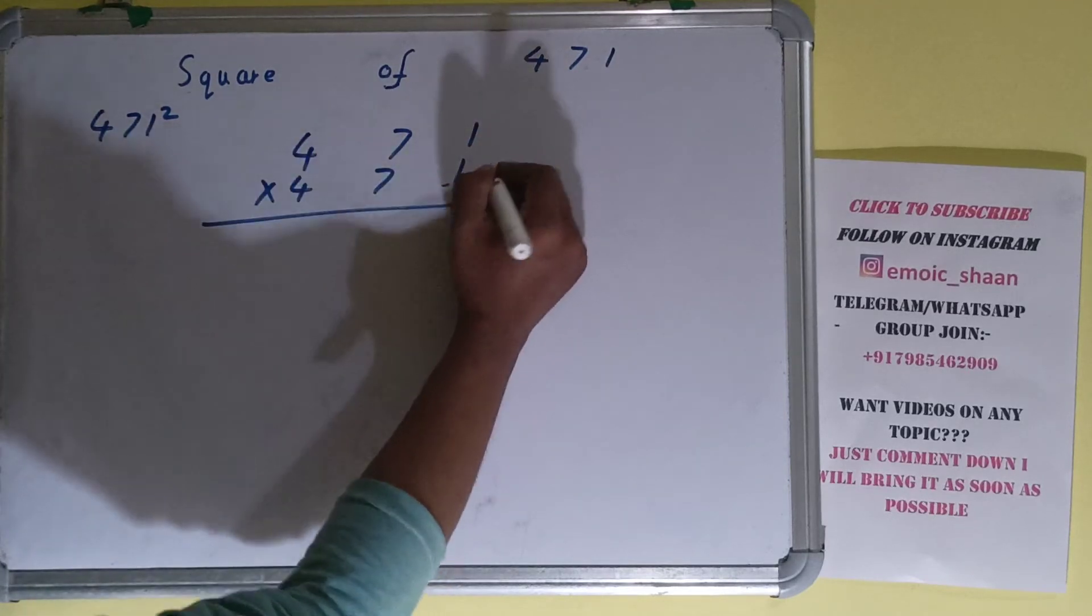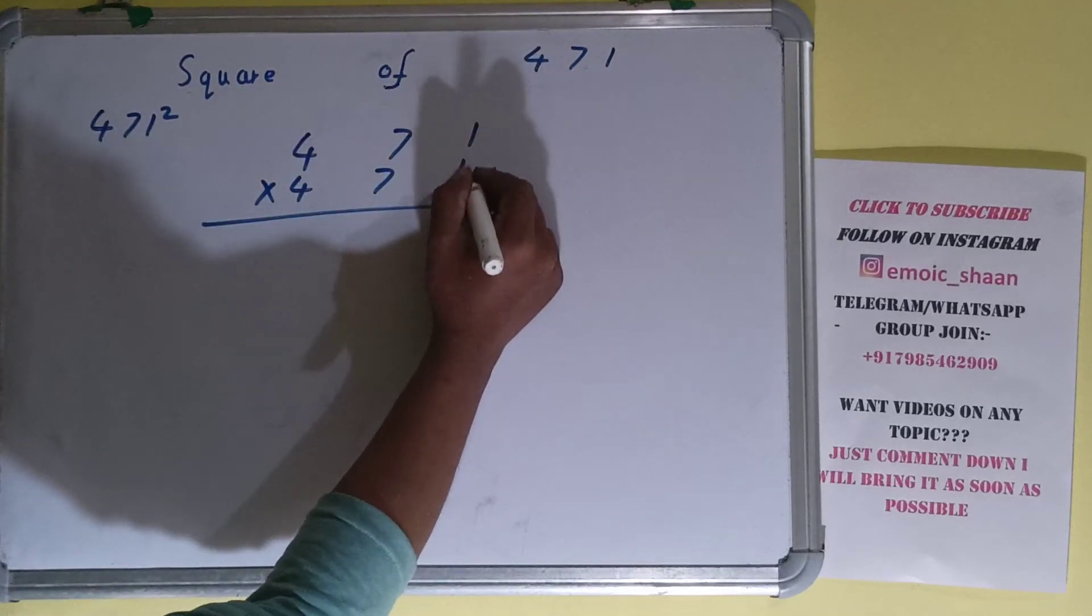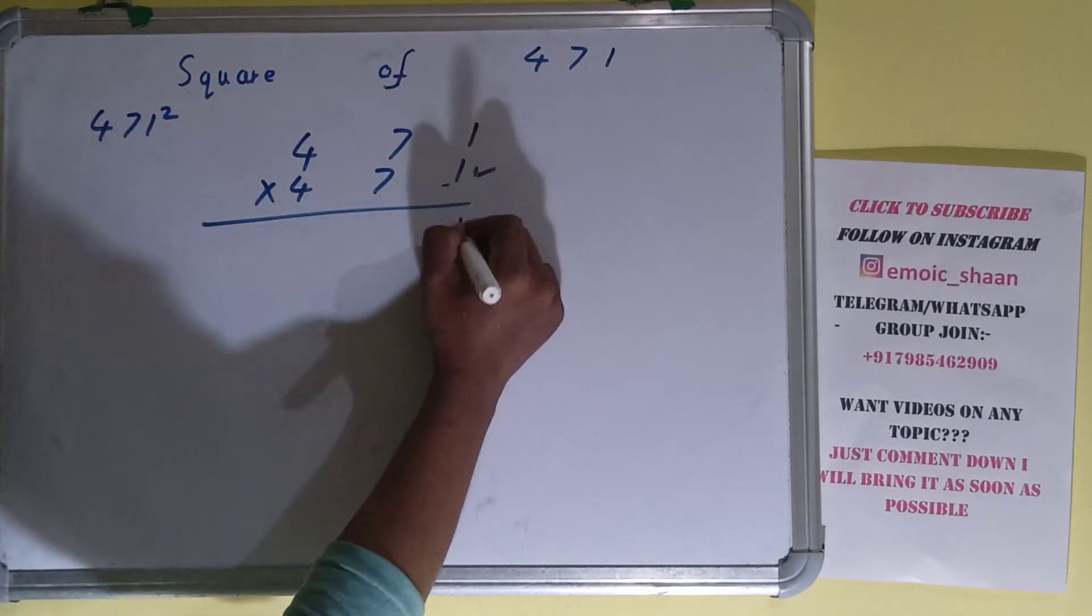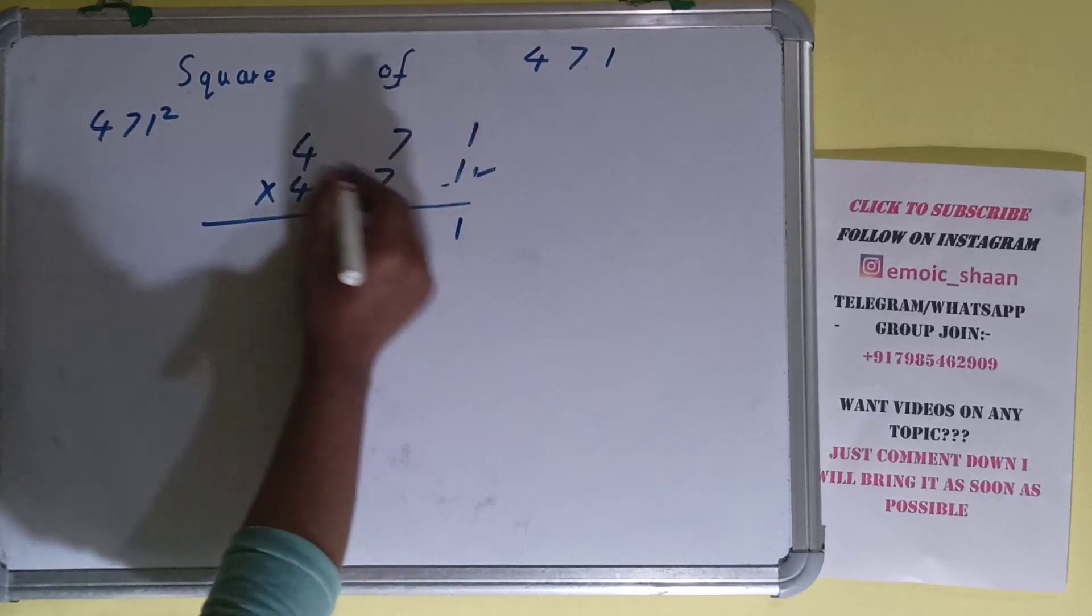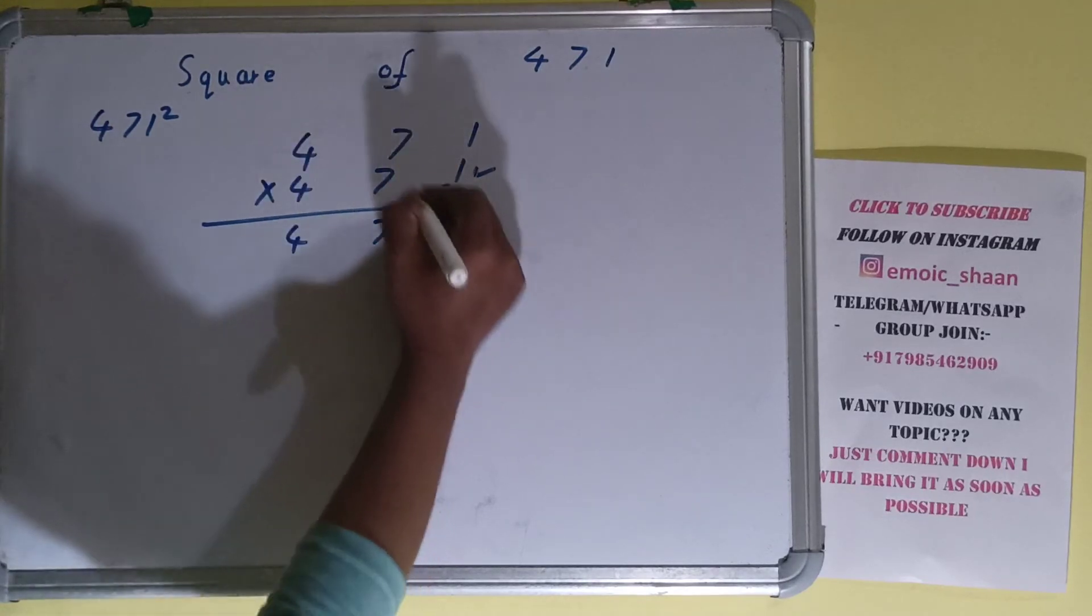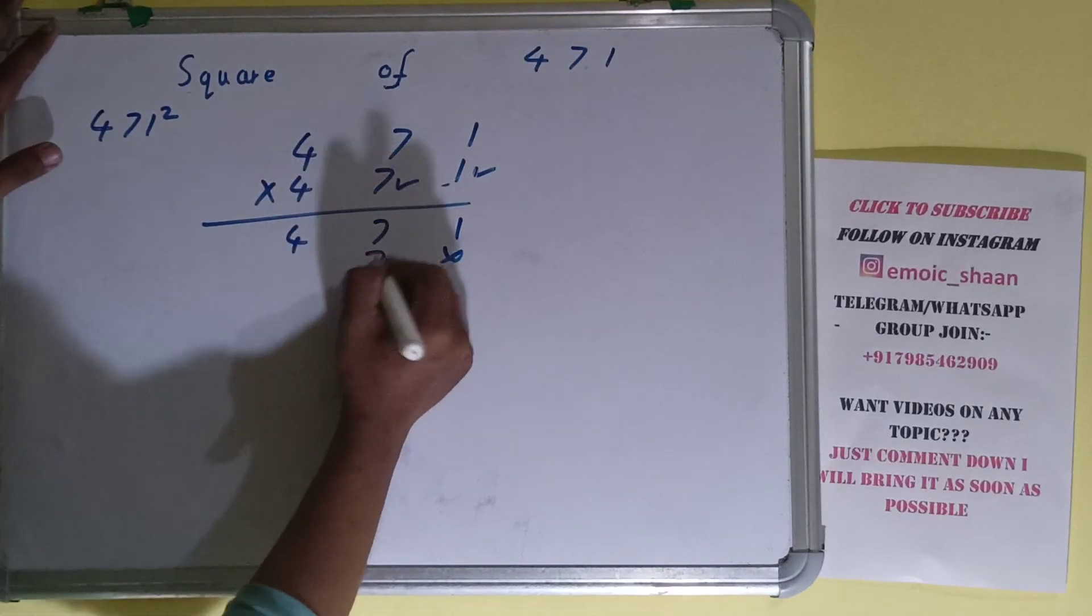So let's begin with this one. Now one into any number is that number, so one into one is one, one into seven is seven, and one into four is four. Now this seven: seven ones are seven, seven sevens are forty-nine, so four carry, seven fours are twenty-eight plus four is thirty-two.